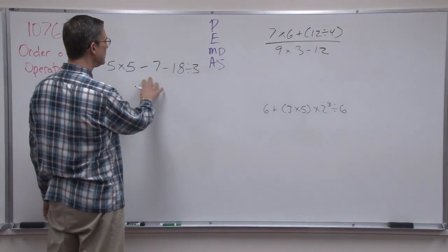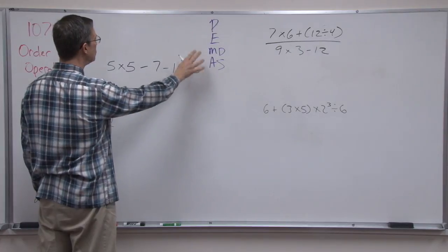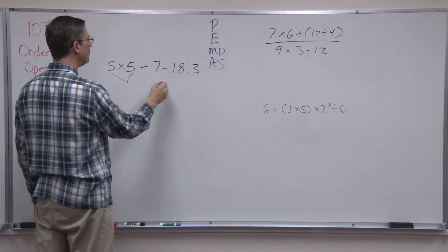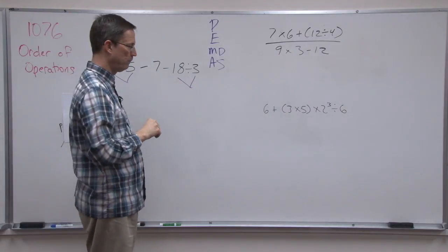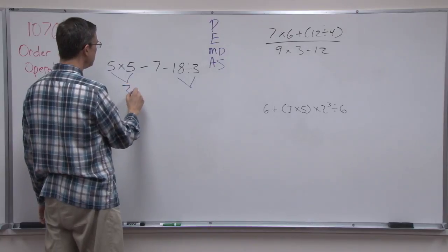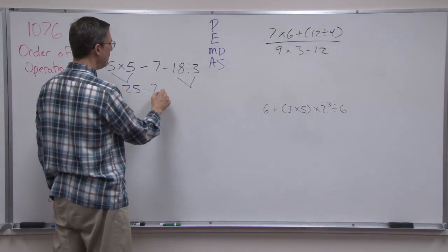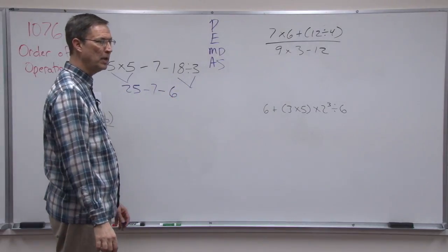So here I do not see any exponents and I do not see any parentheses. So I'm going to do the multiplying and the dividing in the same step. So 5 times 5 is 25. I'm going to bring minus 7 down, and then bring down 18 divided by 3 is 6.